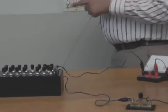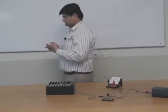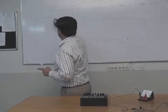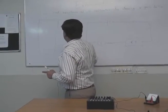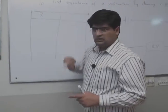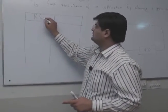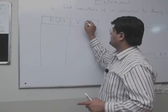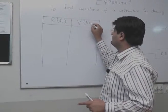Similarly, we will draw a table. This is the R and the units for this resistance is in ohm. And then we will measure a potential and the unit for it is volt.